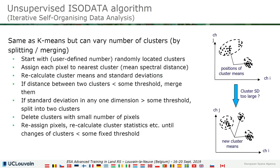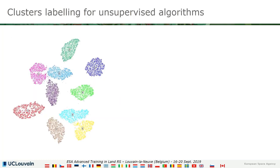ISODATA is very similar to k-means, except that the number of clusters can vary during the algorithm. You start with a default number, but during the process the distances between clusters are measured — if two clusters are too close they are merged. The standard deviation of each cluster is also evaluated, and if it is too high the cluster is split. At the end, the algorithm decides the number of clusters.